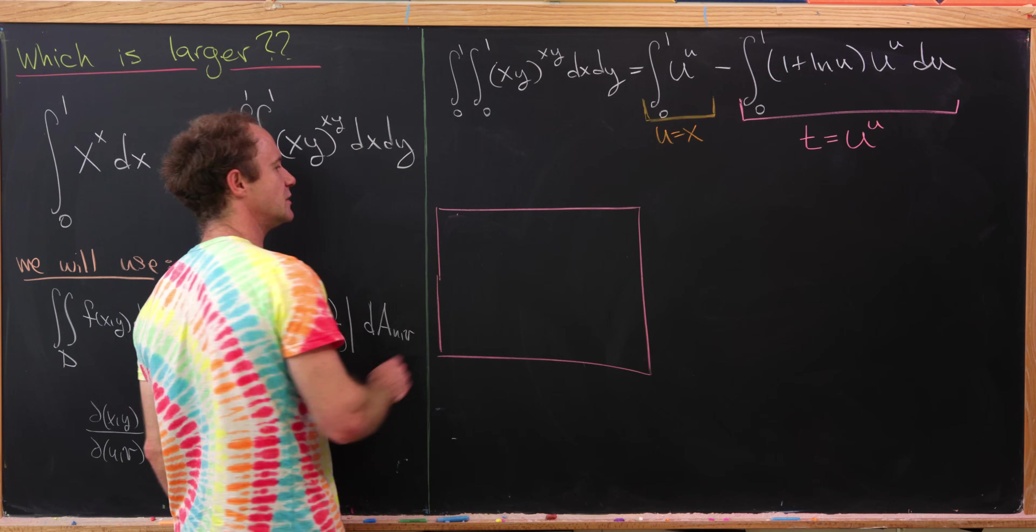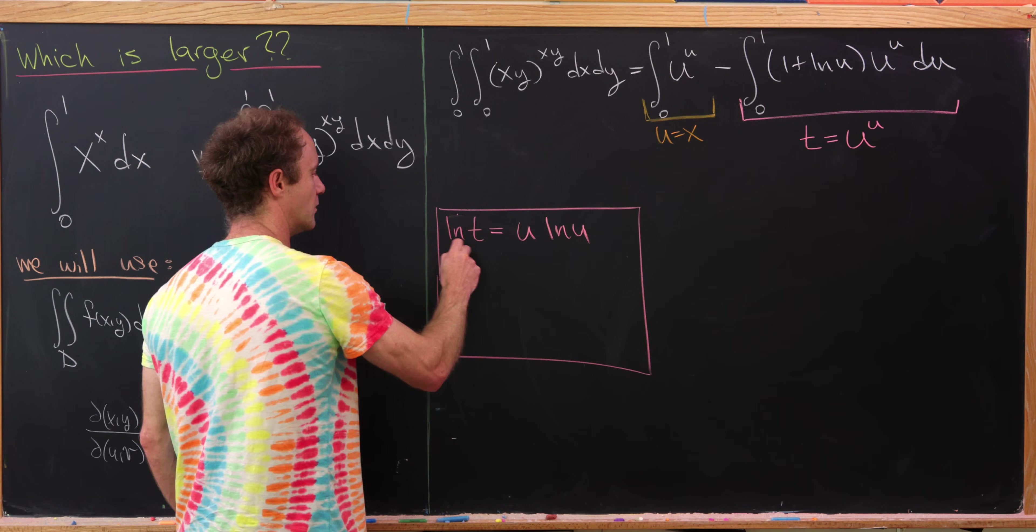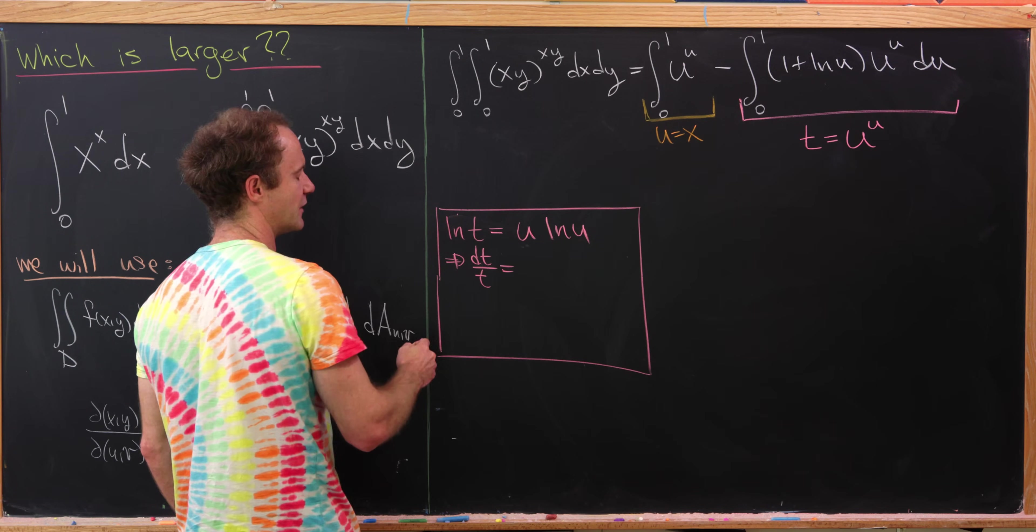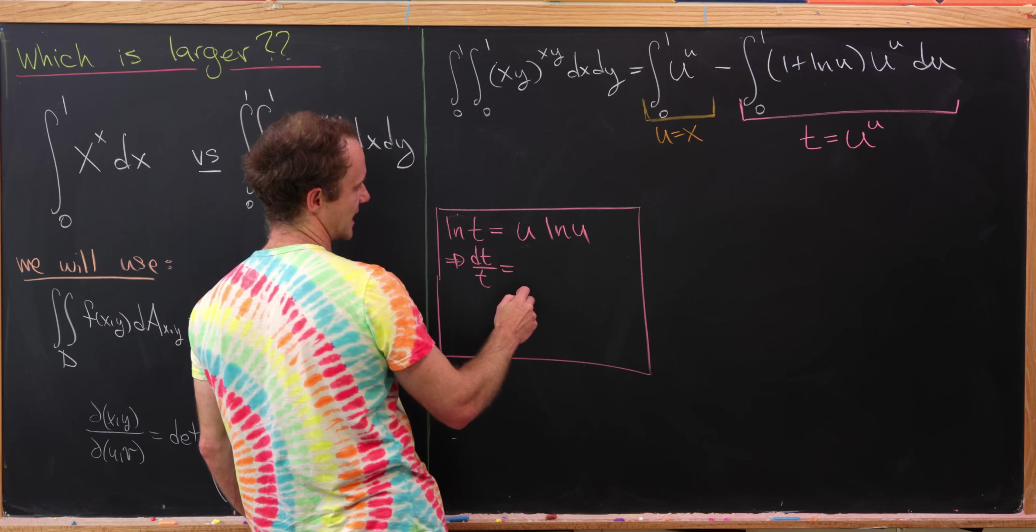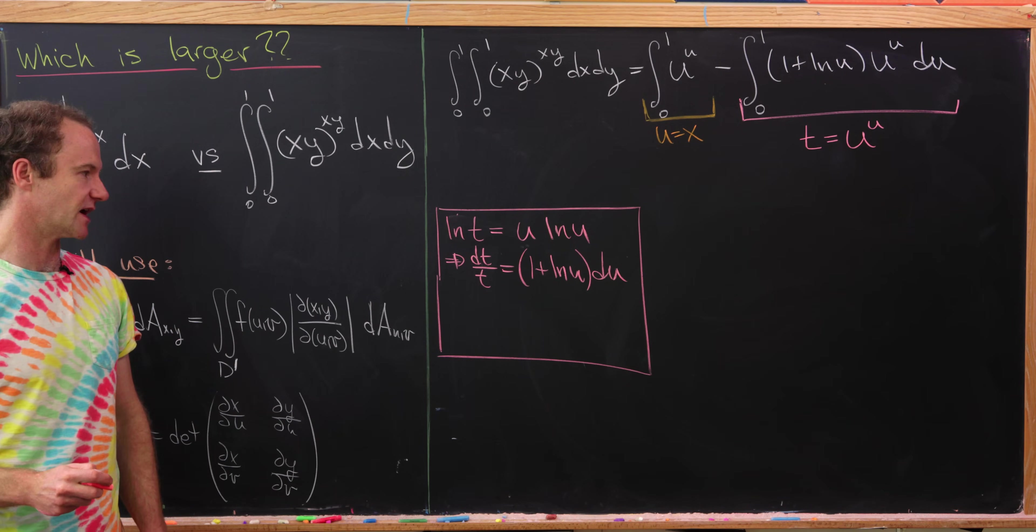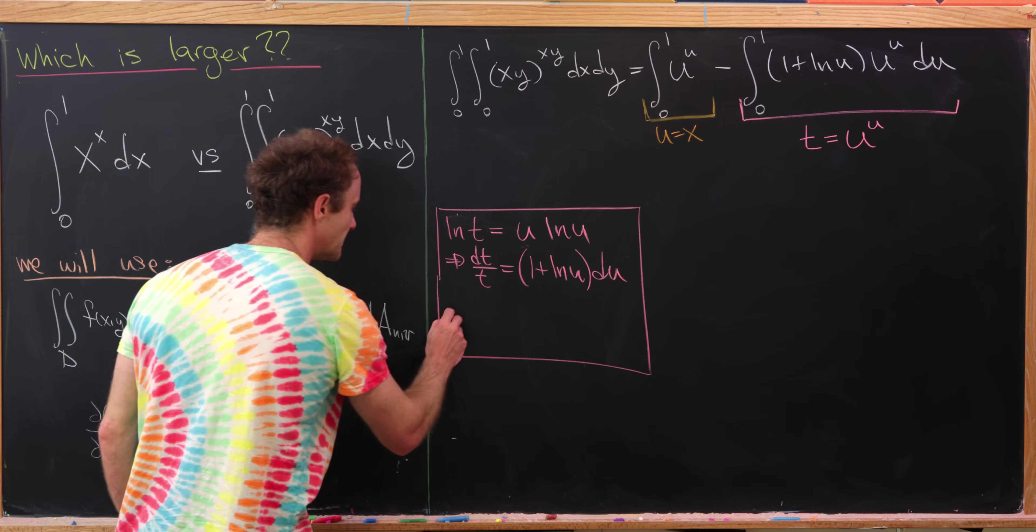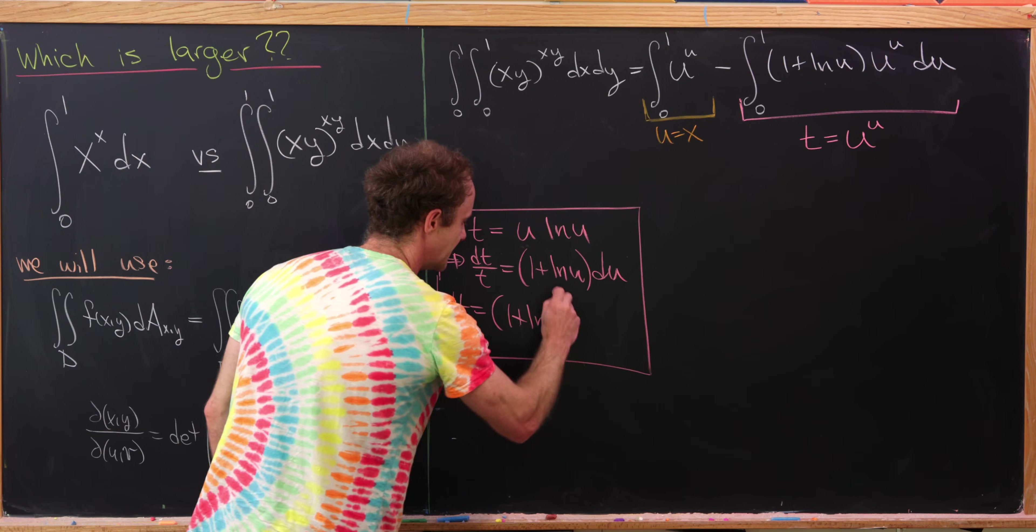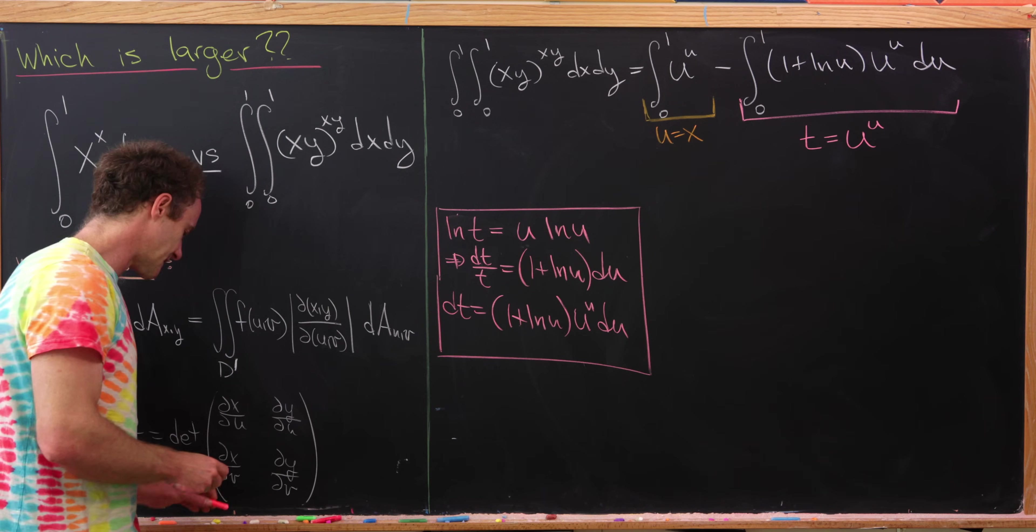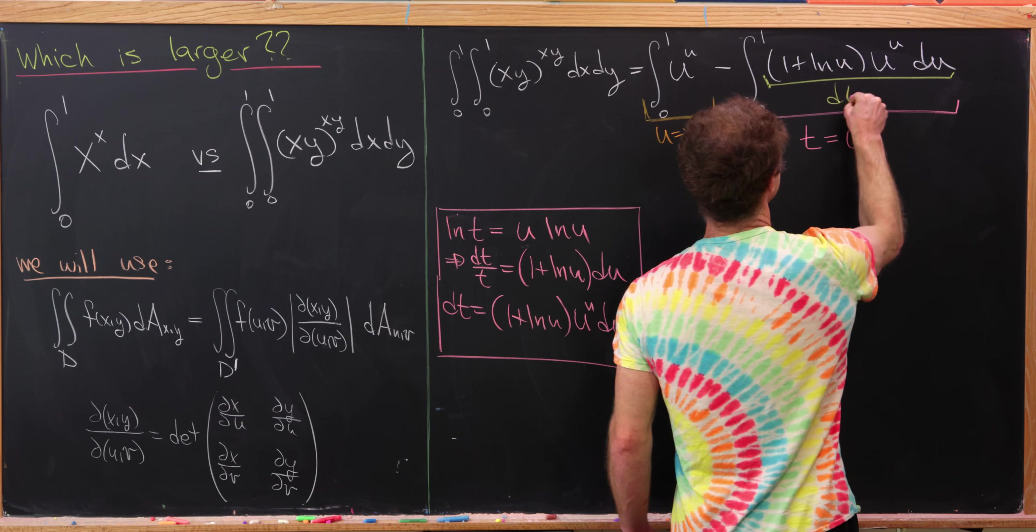And that's actually going to require a little bit of calculation. If t is equal to u to the u, that means that the natural log of t is equal to u times the natural log of u. But that means that dt over t is equal to, well, taking the derivative over here, that'll be something like 1 plus natural log of u du. That's just by taking the derivative of both sides. But now multiplying through by t and using the fact that t is equal to u to the u, we'll have dt, which is equal to 1 plus natural log of u times u to the u du.